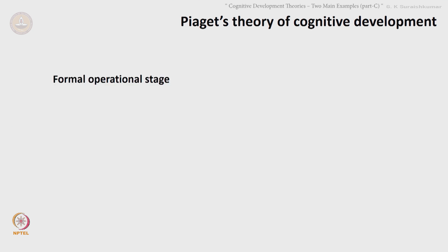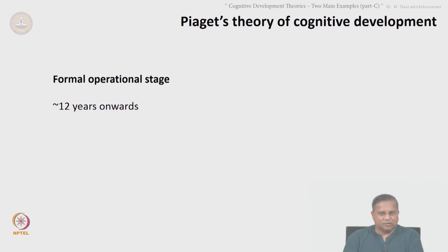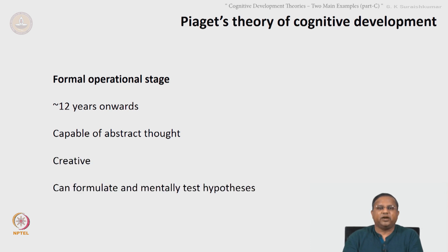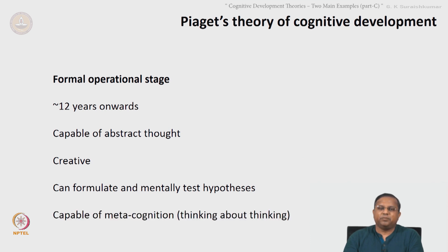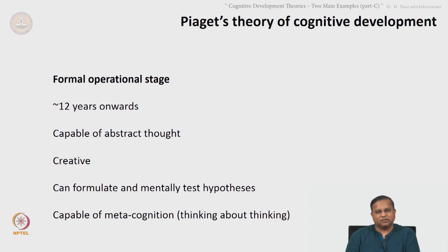The fourth stage is the formal operational stage, twelve years and above. In this stage, the person is capable of abstract thought, creative thinking, and can formulate and mentally test hypotheses. They are capable of metacognition, which essentially means thinking about one's own thinking process. This is the more advanced stage.